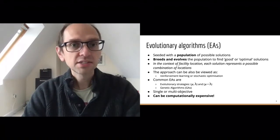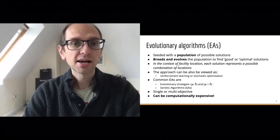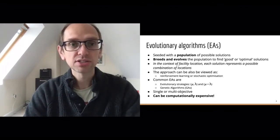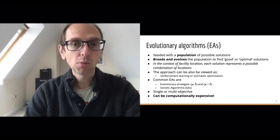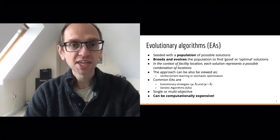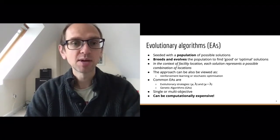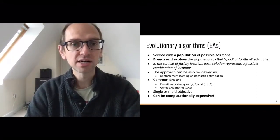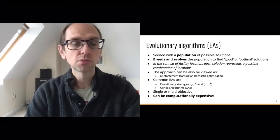So what is an evolutionary algorithm? It's a type of optimisation method that we sometimes call a meta-heuristic. It's a population-based method, meaning we have more than one candidate solution at a time — we have a population of solutions. An evolutionary approach takes that population and breeds and evolves it over time, homing in on good or optimal solutions to the problem.